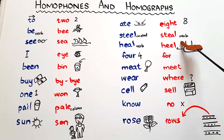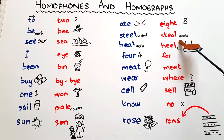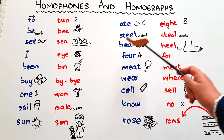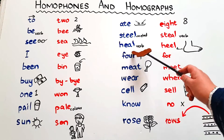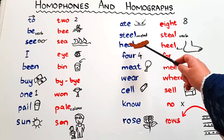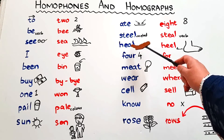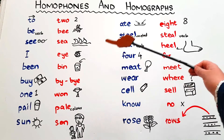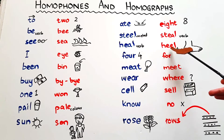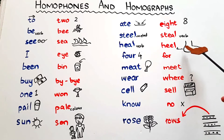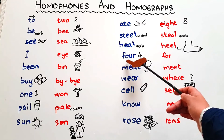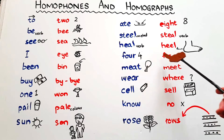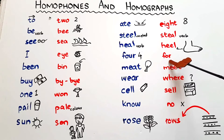'Heal' means to cure — if you have a wound and it is getting better, you would say 'it's healing' or 'it has healed'. Then we have 'heel', the body part — the back part of the foot. 'Four', F-O-U-R, the number, and 'for', F-O-R, used as a preposition, as in 'I'm going for shopping'.